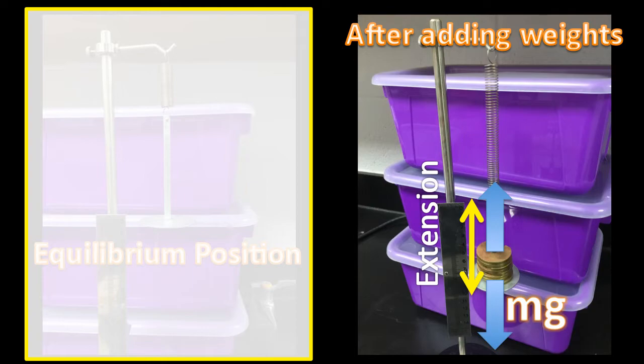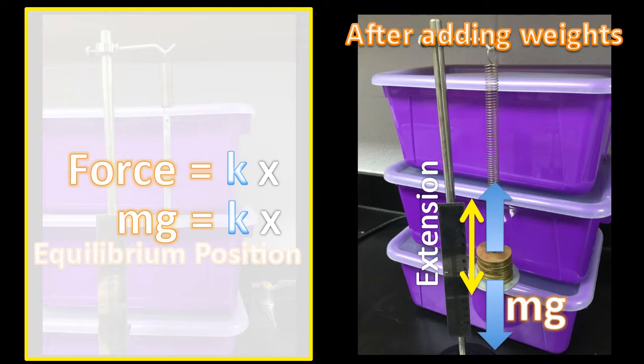Now, by knowing the number of weights we've added, we can calculate the force of gravity, mg. This is identical to the spring force. And by using the equation force equals spring constant times x, x being the extension. And once again, knowing that the force is equivalent to the weight acting on the weights, mg, we could rearrange that equation and solve for the spring constant by dividing by the extension.